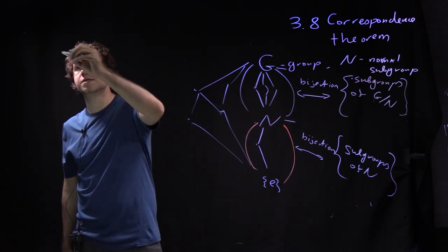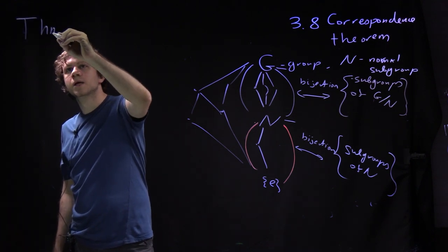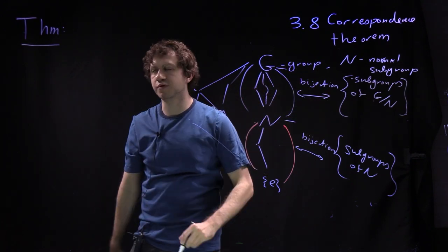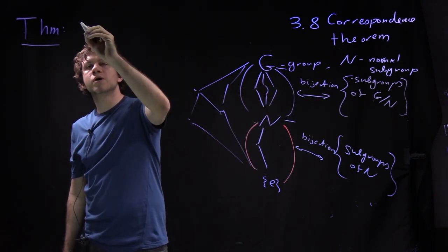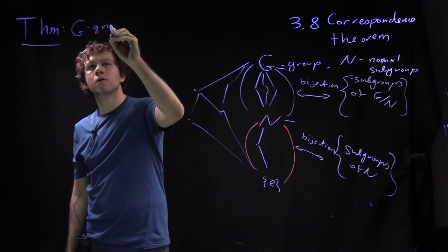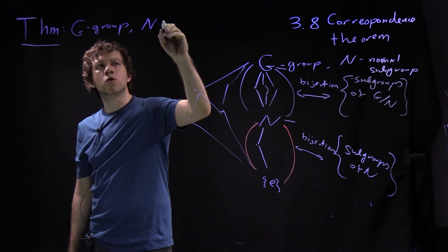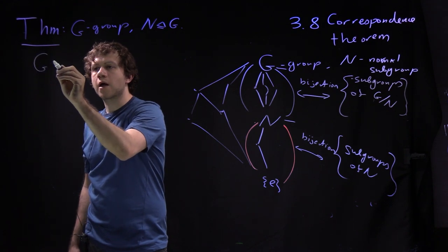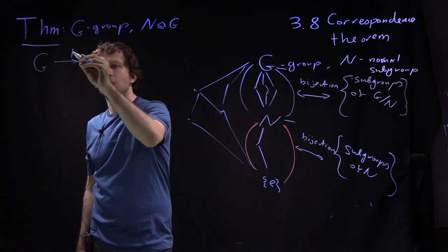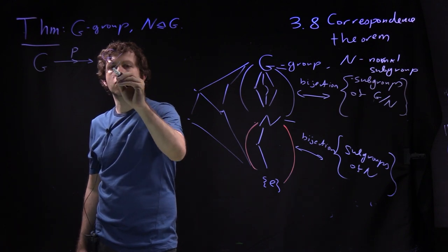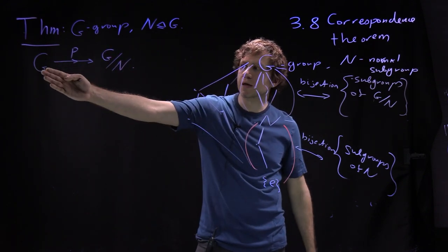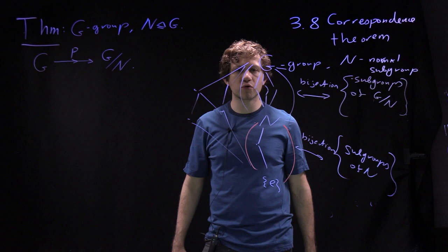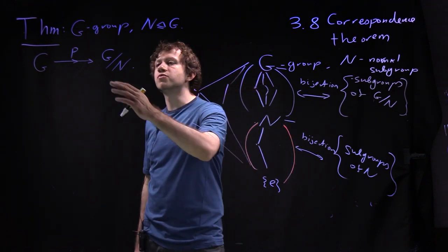Let me state the theorem. It has a pretty long formulation and then I will prove it — the proof is more or less trivial. So suppose you have G the group and N is a normal subgroup inside G. Then we have this projection: G mapped surjectively using a map P to G factored over N. This is what we discussed in the quotient group construction — I call it 'factor group' because I was taught in Russia, but in English people usually use 'quotient group.'